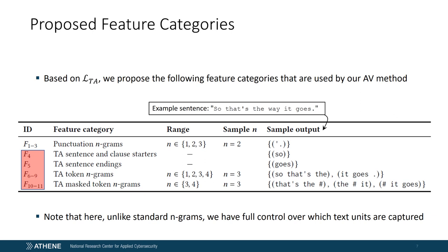Punctuation n-grams, for example, are obtained by extracting all punctuations from the sentence into a sequence. Then we apply the n-gram operation, that means the sliding window operation, on the resulting punctuation sequence, so that, for example, for n equals 2, the resulting punctuation bigram is apostrophe full stop.